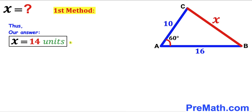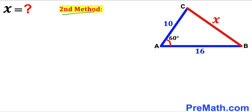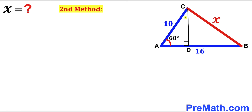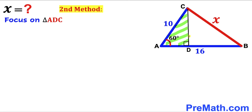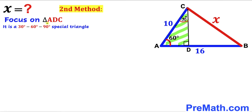Now for the second method. I have dropped a perpendicular CD onto side AB, resulting in two right triangles: right triangle ADC and right triangle BDC. Focusing on right triangle ADC: we know the angle at A is 60°, the angle at D is 90°, so the remaining angle must be 30°, since the three interior angles of a triangle sum to 180°. This makes triangle ADC a 30-60-90 special triangle.